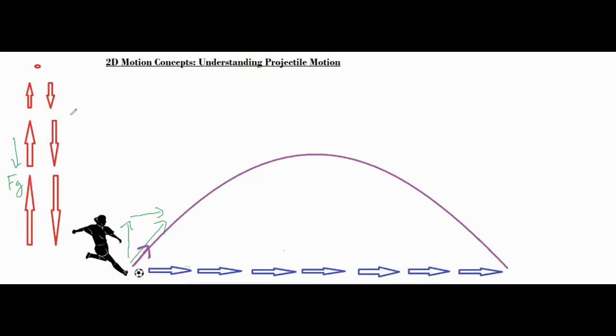As it's falling back down it is speeding up the entire time because force of gravity is now working in the exact same direction it is moving. So if you are just thinking about the vertical motion of the soccer ball as it's moving up, it does slow down towards the peak and then speed up towards the ground.